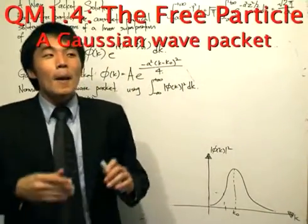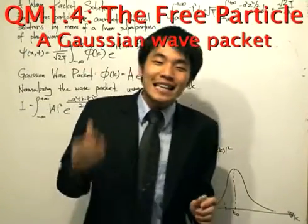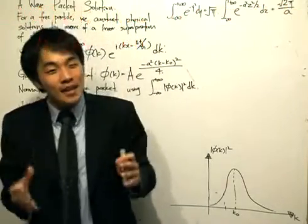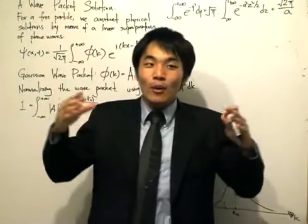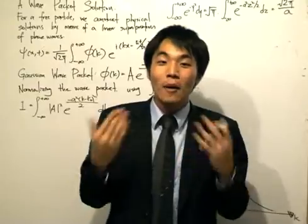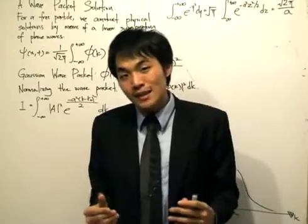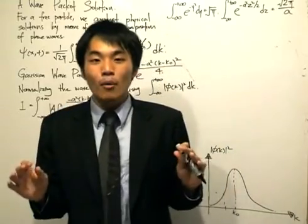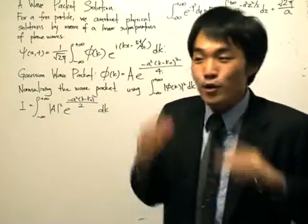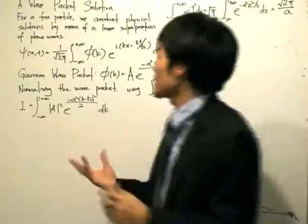But we also left off saying that we can find physical solutions by taking a linear superposition of these plane waves so that we will localize the wave solution and end up with a wave packet. This wave packet can be used to represent the particle. So for today's lesson, it's an explicit example on how we're going to find a wave packet to show that really what we talk about actually makes some sense.